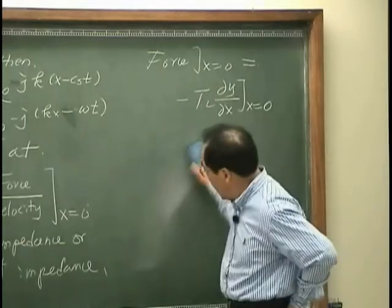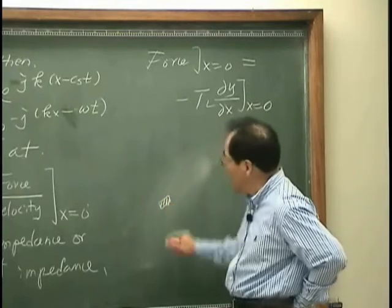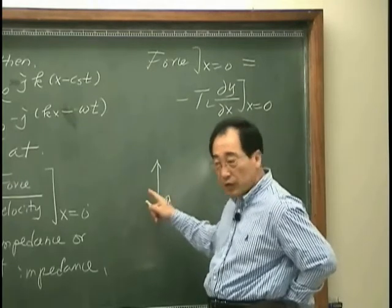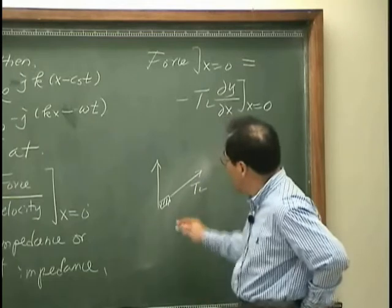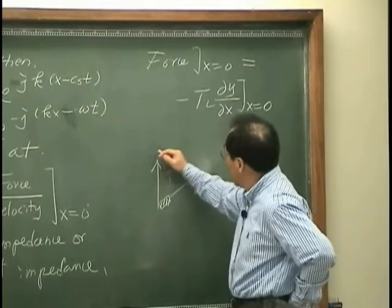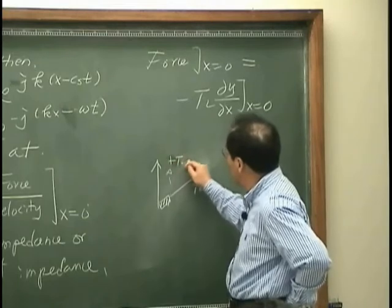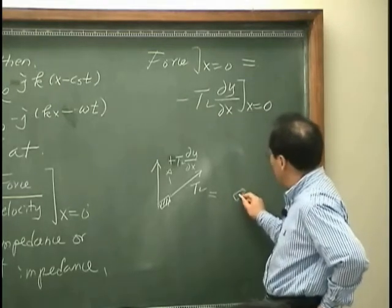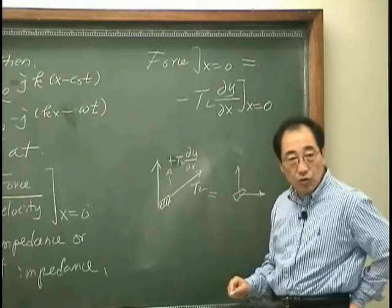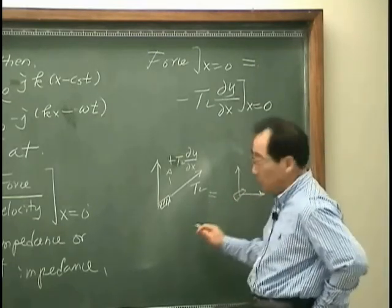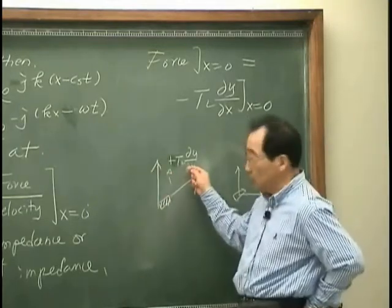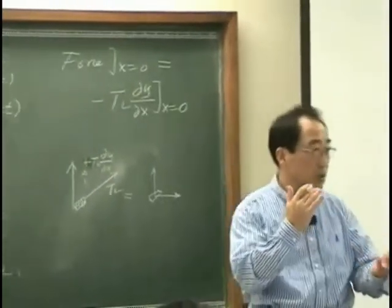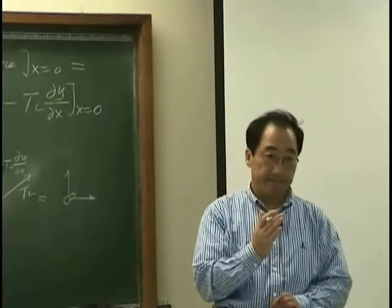Or you may think of it this way: take a very small string element and find the force acting in the y direction. That force is TL, and the force minus TL times dy/dx has to equal the inertia force. For a small element that inertia term should be zero, so the two forces must balance — therefore the y-direction force is minus TL times dy/dx.